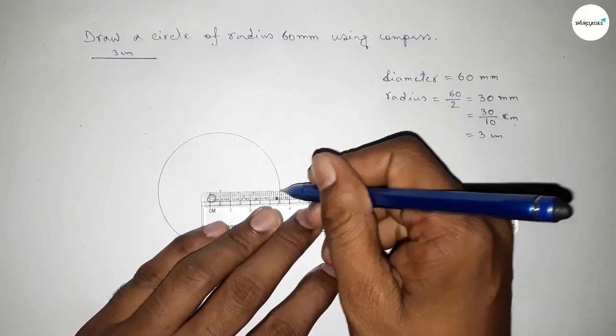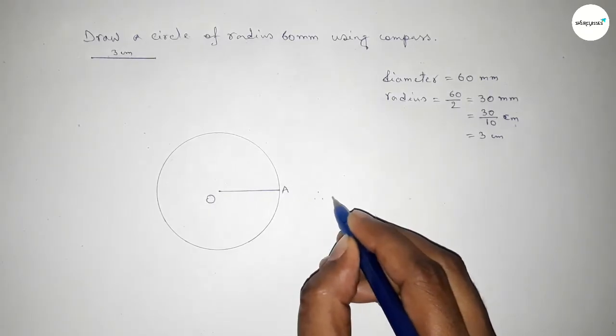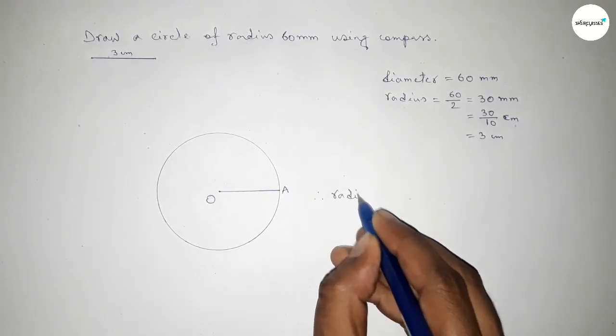So taking here point O. Therefore, radius OA equal to 3 centimeters.